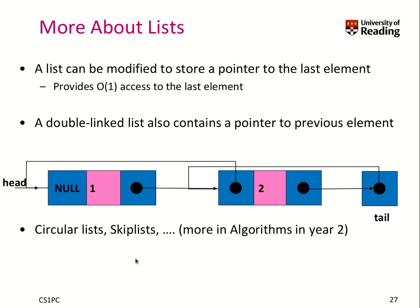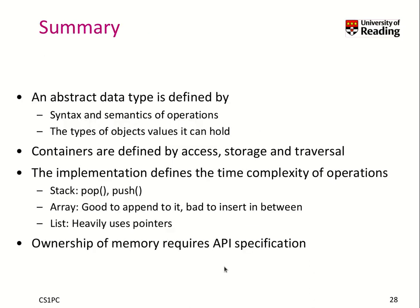There are a lot more types of lists — circular lists, skip lists, and so on — that you will understand better in algorithms. I think they are really basic data structures and very enjoyable.